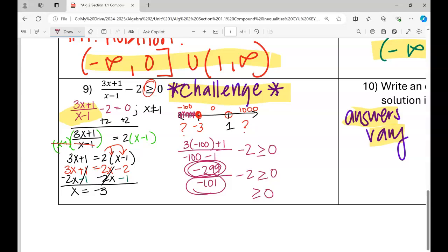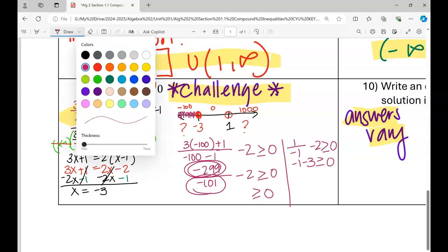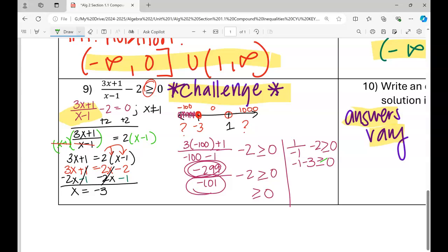Then if we pick 0 to see true or false, then we're going to say, 0 times 3 is 0. 0 plus 1 is 1 on the numerator. 0 minus 1 is negative 1, minus 2, true or false. Would this give us something bigger than 0 or equal to 0? Well, negative 1 minus 3, bigger than or equal to 0, and that's not true. So this right here is false, so we are not shading in the middle, because that's not going to give us a number that's going to be equal to 0 or bigger than 0.